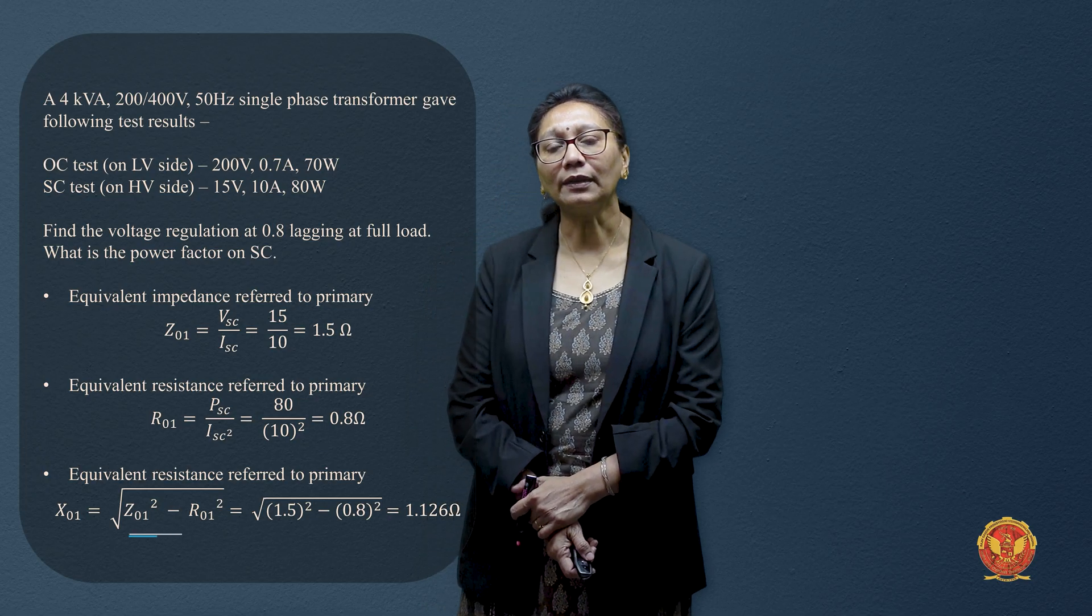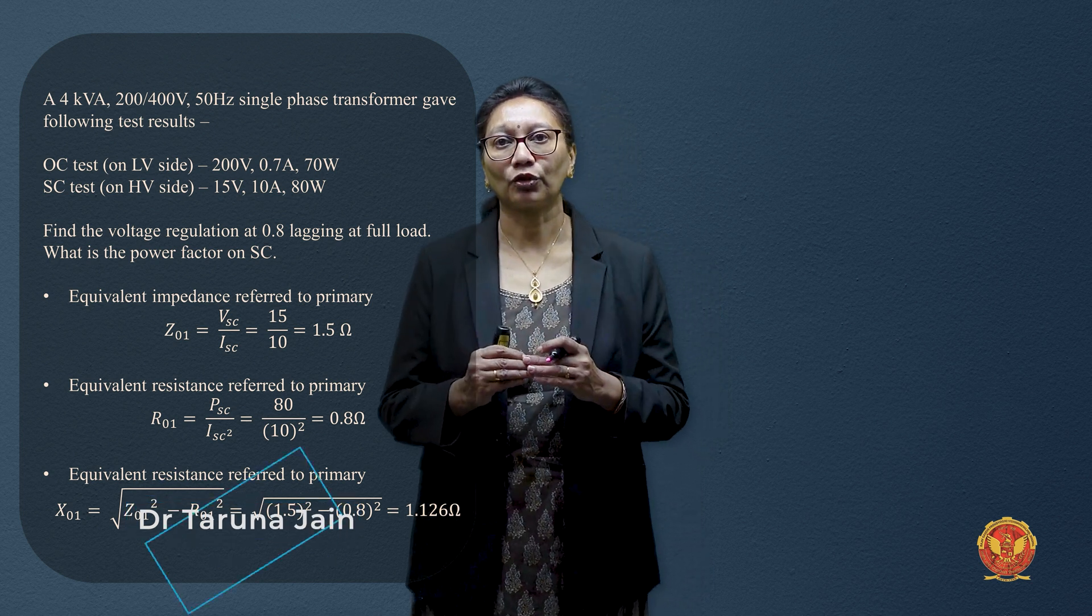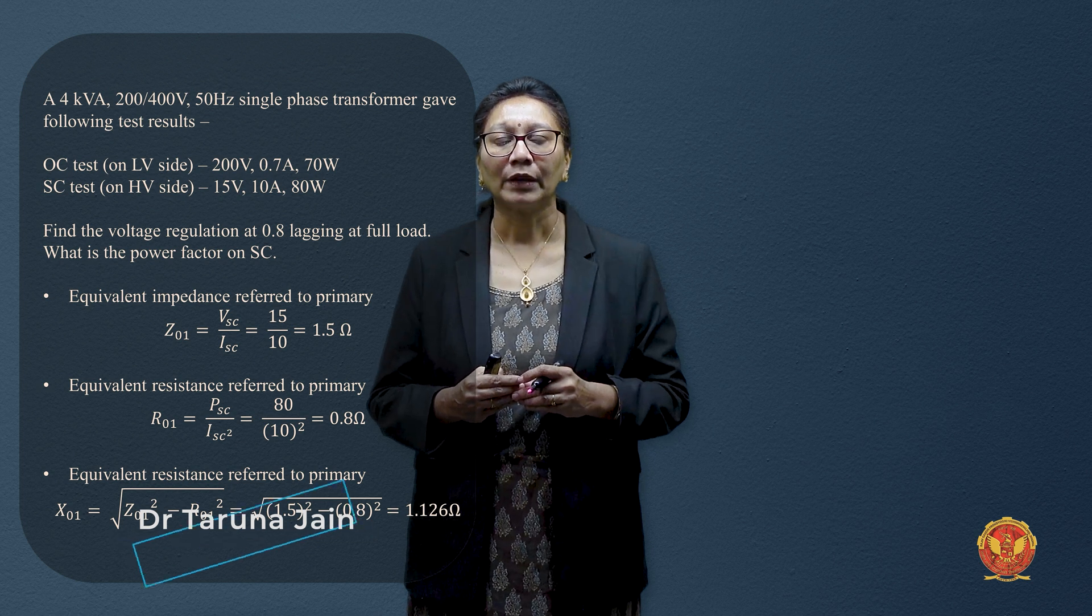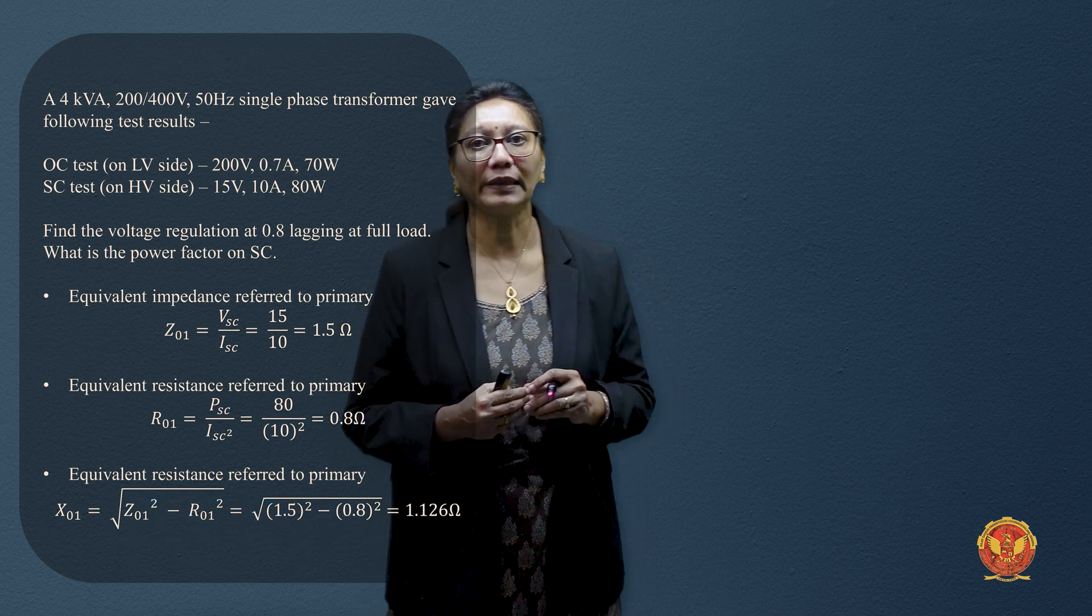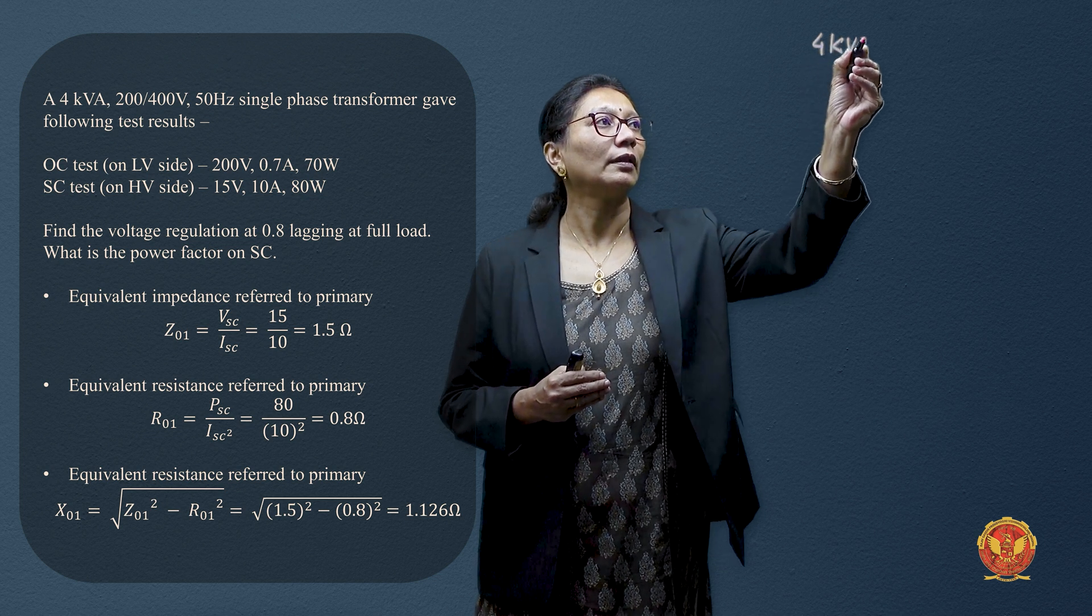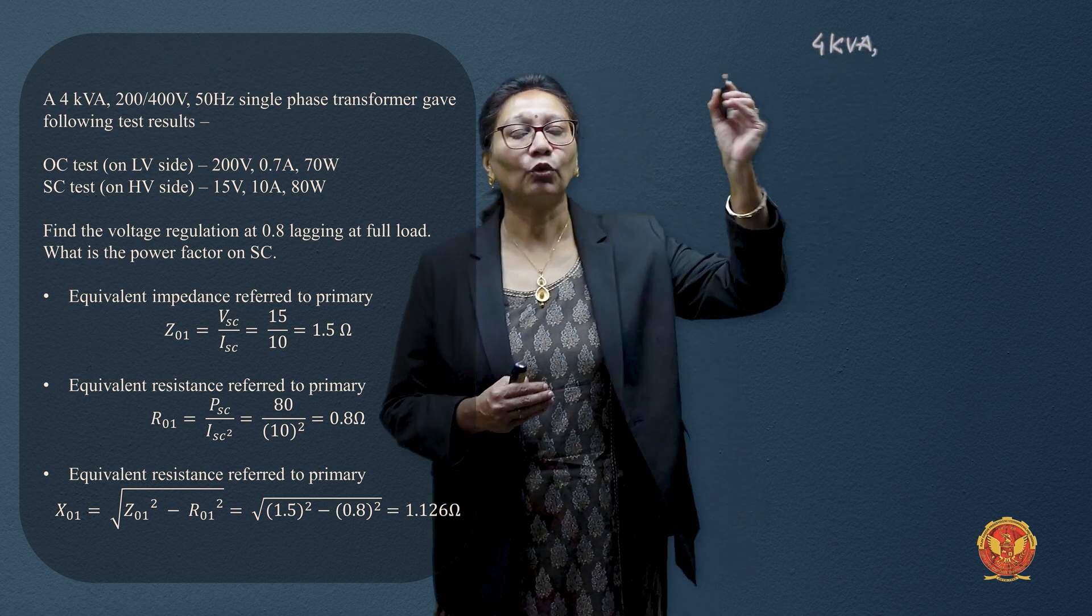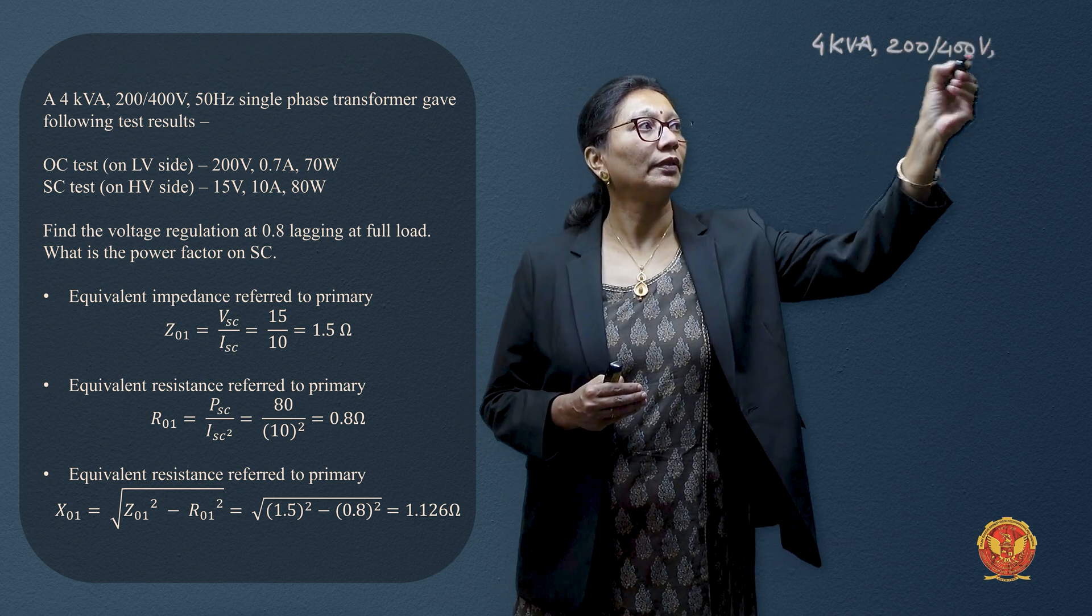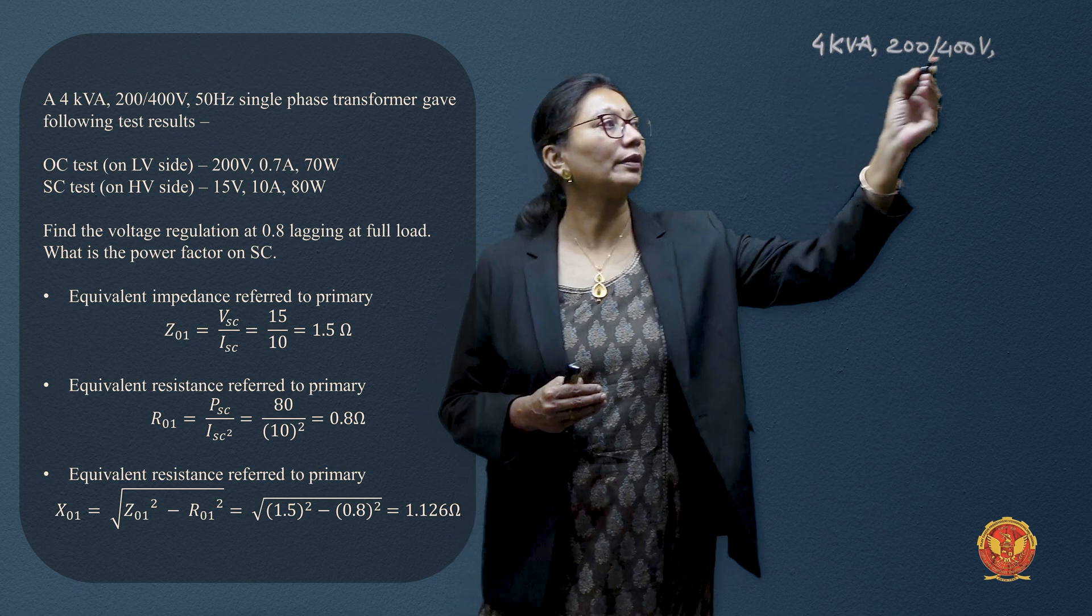Let us solve one numerical based on open circuit and short circuit test in which we have to calculate the regulation. We have the rating of transformer which is 4 kVA, then voltage 200/400 volt. Here 200 volt is primary side and 400 volt is secondary side.